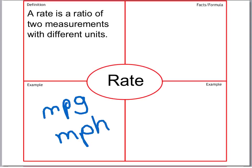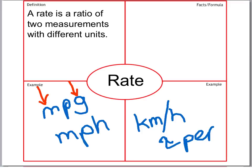There's also kilometers per hour. We usually abbreviate that km with a slash per hour. So our two different measurements here. This would be distance. This one would be fuel.